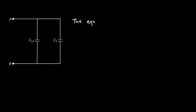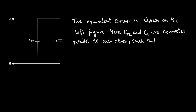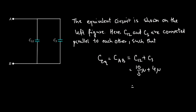The equivalent circuit is shown in the left figure. Here, C12 and C3 are connected in parallel, so the equivalent capacitance across points A and B is the sum of C12 and C3. That gives us 10 over 3 microfarad plus 4 microfarad, which equals 22 over 3 microfarad, and this is the required capacitance across AB.